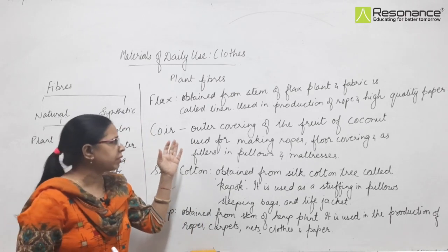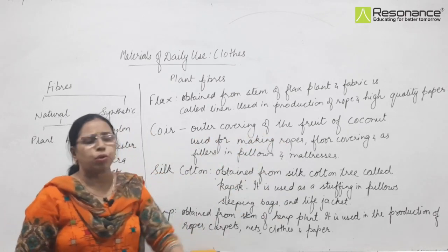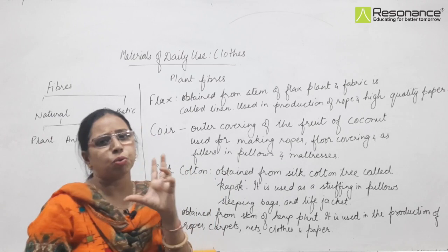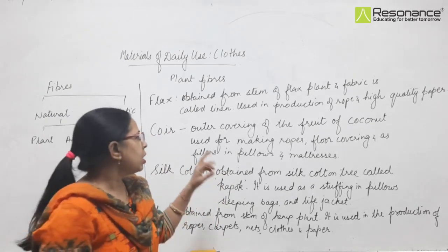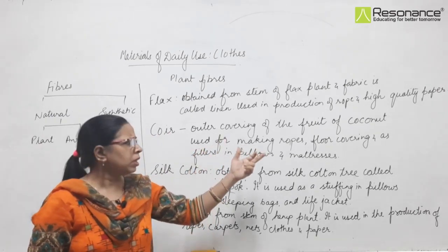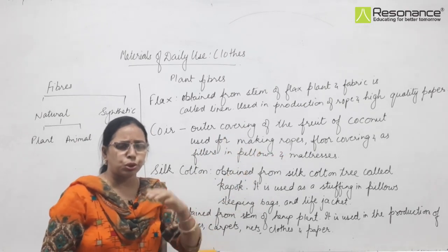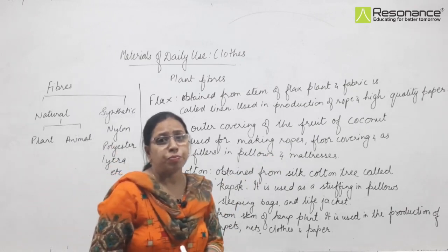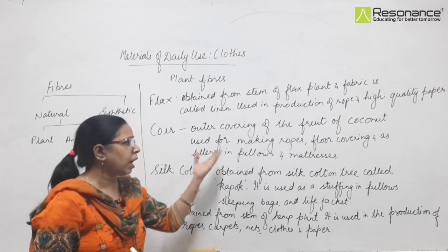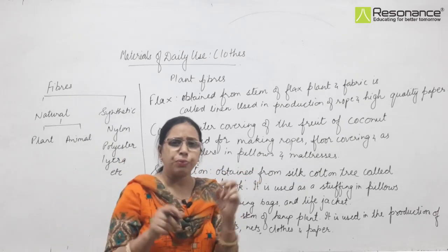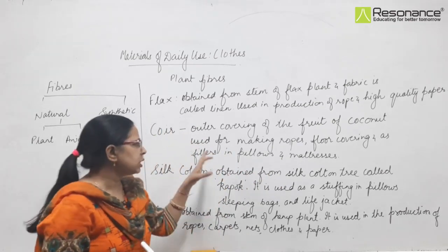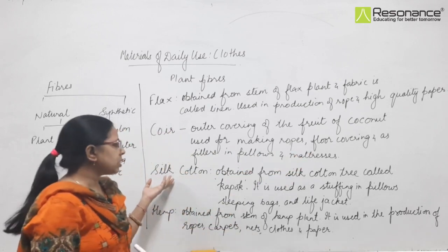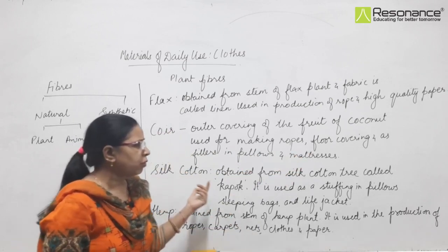Then there is coir. There are questions made from this in competitive exams - the outer covering of the fruit of the coconut plant. It is a fruit fiber and that outer covering is used for making ropes and also used for making floor coverings and carpets. You must have heard about coir foam which is used in mattresses and pillows as fillers.